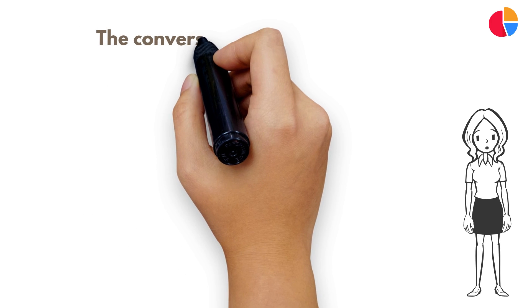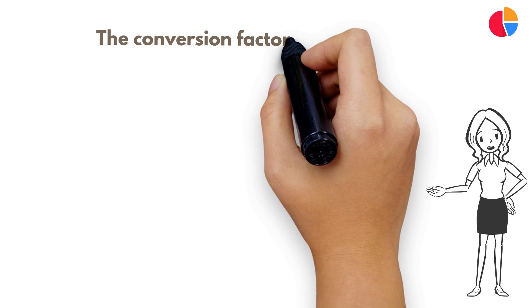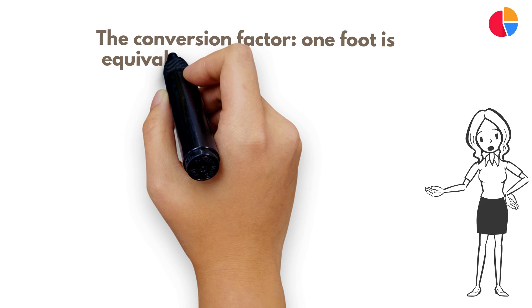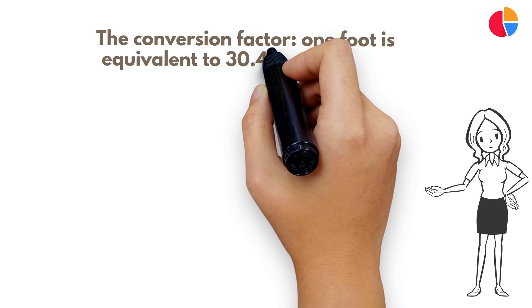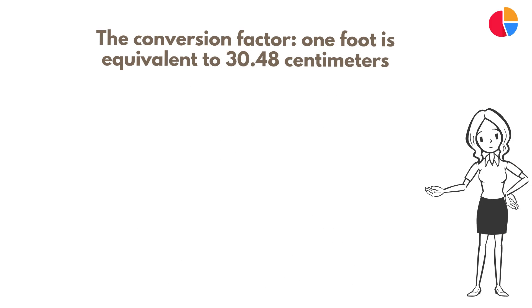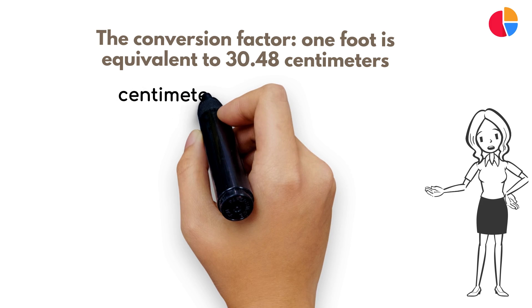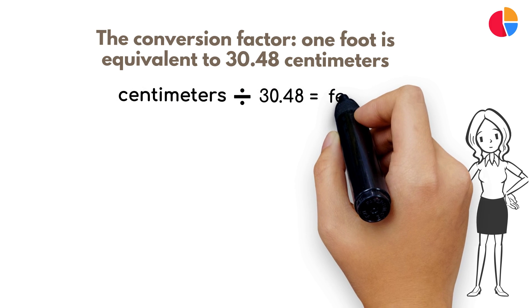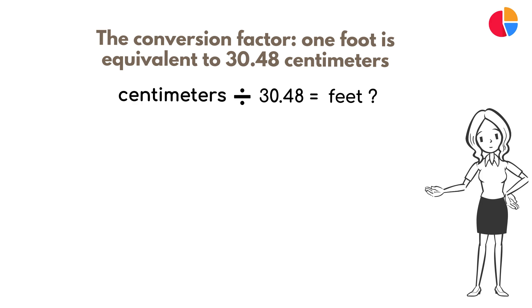Firstly, let's get familiar with the conversion factor. One foot is equivalent to 30.48 centimeters. To convert from centimeters to feet, you simply divide the number of centimeters by this conversion factor.